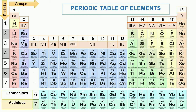The 7th period has 31 elements having atomic numbers 87 onwards; it is an incomplete period. The elements having atomic numbers 58 to 71 are called lanthanides, and the elements having atomic numbers 90 to 103 are called actinides. Lanthanides and actinides have been placed separately at the bottom of the periodic table and are collectively known as inner transition elements.